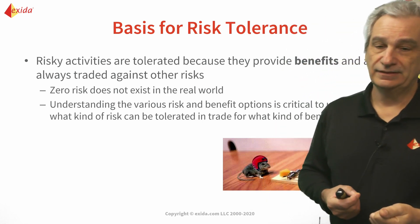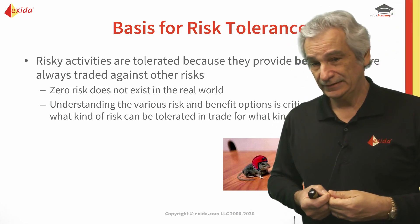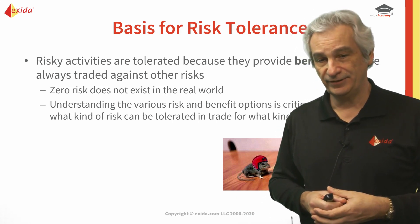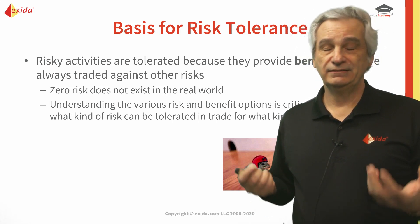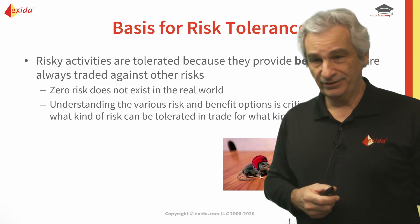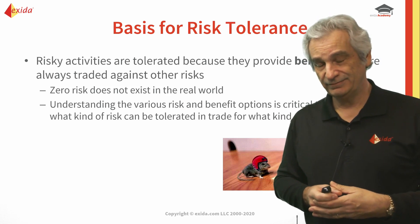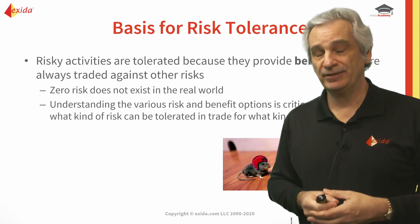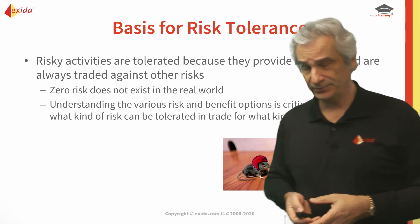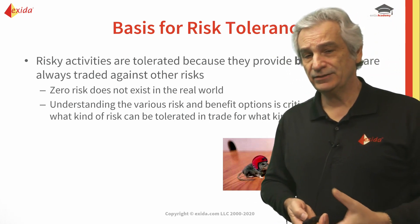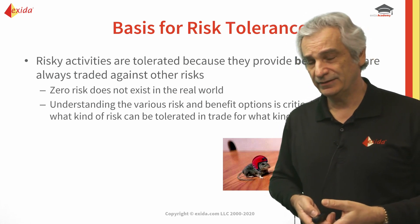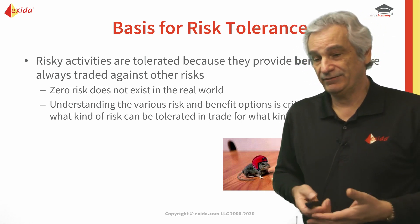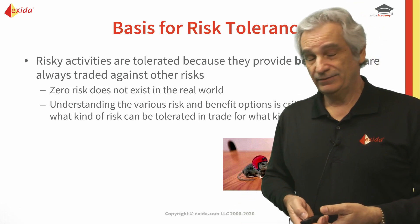Some companies are more risk averse than others - they want to minimize the risk as much as possible. Others are willing to take on more risk because of the benefits. Looking at accidents in the last ten years or so, the majority of them are in the oil and gas sector. Chemicals tends to be pretty good - there are very few chemical accidents here in the US compared to elsewhere. So the chemical industry is doing okay, but it's the oil and gas industry having more of the accidents. You could ask: are they cutting corners? Are they not following procedures? What's going on?